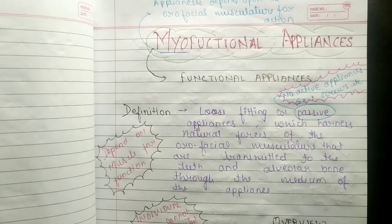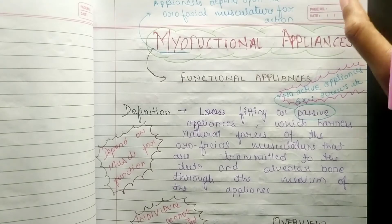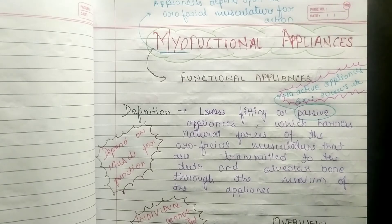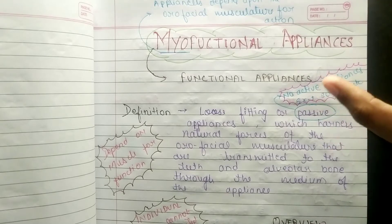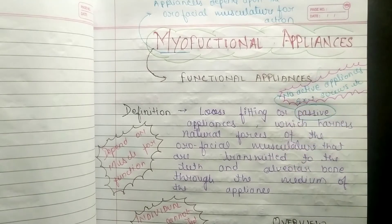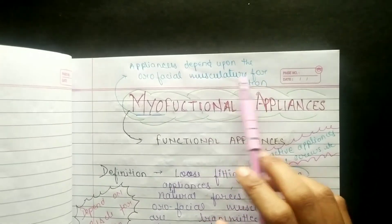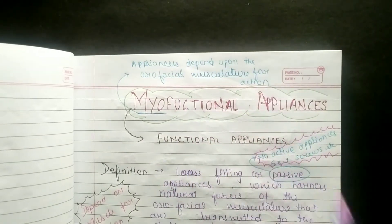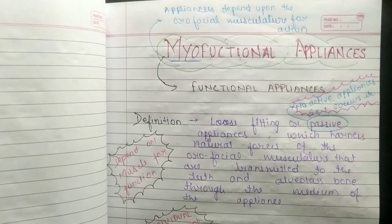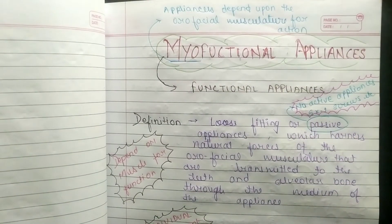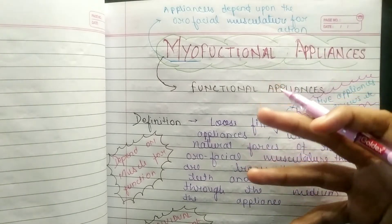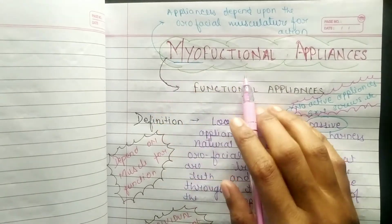Myofunctional appliances are different from functional appliances — they are distinct categories. We want to know about myofunctional appliances because their function mainly depends on the muscles. These appliances depend on the orofacial musculature for action. When we insert these appliances in the mouth, they are based on muscle support, which is why we also refer to them as myofunctional appliances.